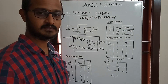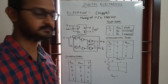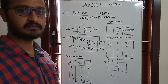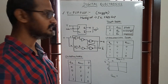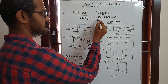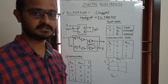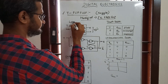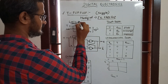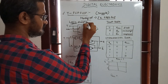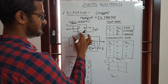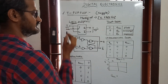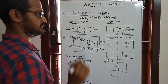Hi friends, this is the last flip-flop — the T flip-flop, also called the Toggle flip-flop. If you want to modify it, it is the JK flip-flop. This is the logic diagram. If you join J and K together, it becomes T. This is the Toggle flip-flop, and this is the clock.